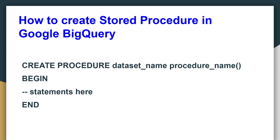Next, we are going to create a stored procedure in Google BigQuery. This is the syntax for creating the procedure: dataset name, then specify the procedure name, then BEGIN, then specify the statements or queries here, and finally END. Let's start this demo.